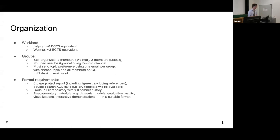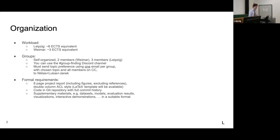These slides will be uploaded as always, so you don't need to take notes. The project report has some formal requirements: about 8 pages in ACL double-column style, for which we provide a LaTeX template. These 8 pages include figures but exclude references. Alongside the report in PDF format, we expect your code in a Git repository with full commit history. Also include any supplementary materials — datasets, models, evaluation results, or visualizations — in a suitable format we can open and review.